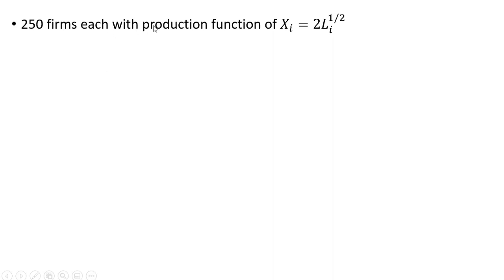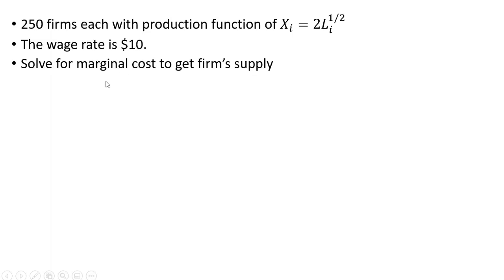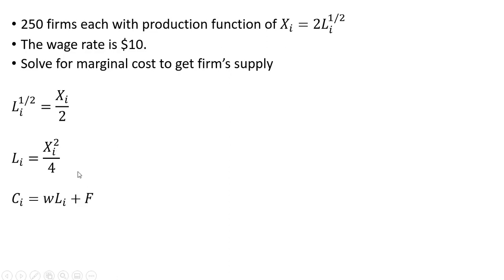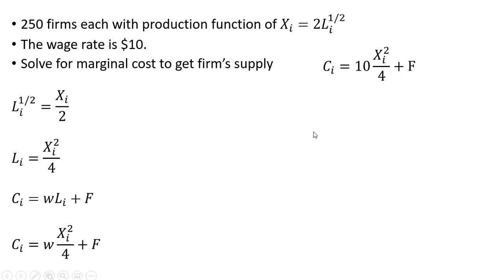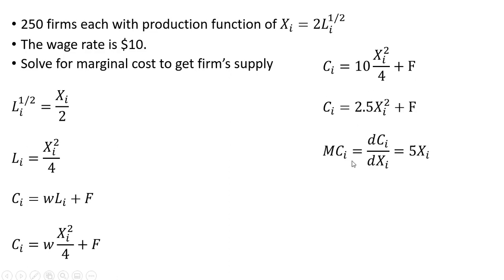Now let's get back to the firms. There are 250 firms, each with the following production function, where L is units of labor and X is the quantity of good X. The wage rate is $10. We want to solve for the firm's marginal cost, and then from there get the firm's supply curve. We start by solving the production function for units of labor — squaring both sides, we have that result. Recognizing that the firm's cost is variable cost — the wage times units of labor plus fixed cost — we substitute in for L: X squared divided by 4. Substituting $10 for W and simplifying, 10 divided by 4. Taking the derivative of the firm's cost function with respect to good X, we get marginal cost equals 5X.